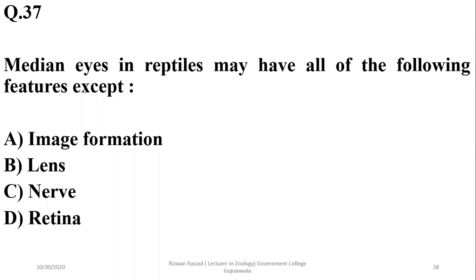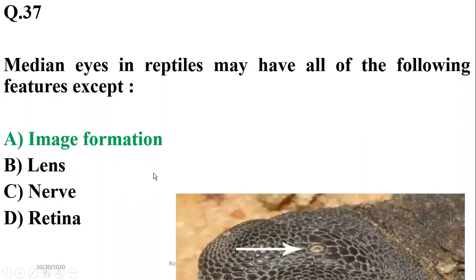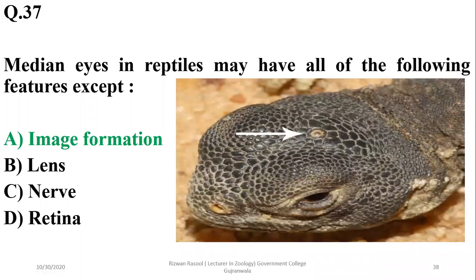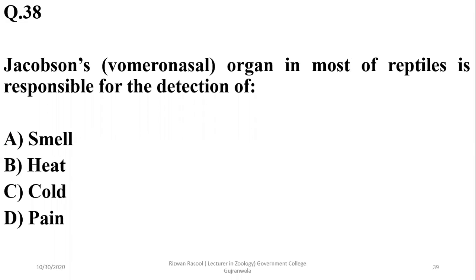Question thirty-six: median eyes in reptiles may have all of the following features except image formation. Median eyes have a lens, nerve, and retina, but are not used for image formation — they can only help in the detection of light and dark periods.